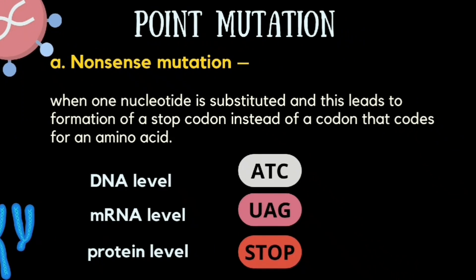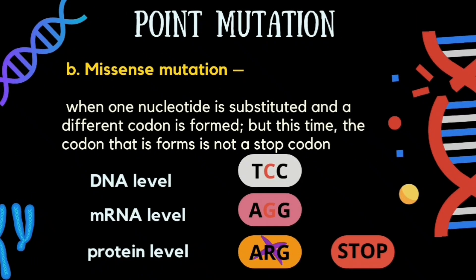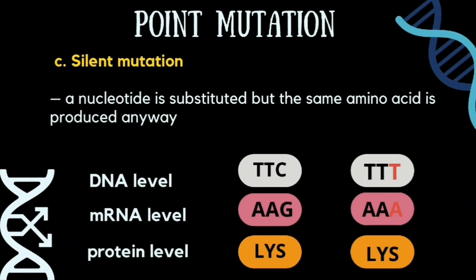In nonsense mutation, one nucleotide is substituted and this leads to the formation of a stop codon instead of a codon that codes for an amino acid. In missense mutation, one nucleotide is substituted and a different codon is formed, but this codon is not a stop codon. In silent mutation, a nucleotide is substituted but the same amino acid is produced anyway.